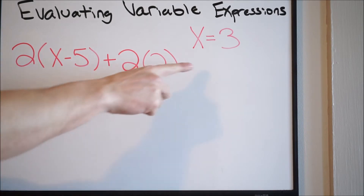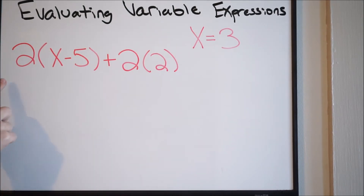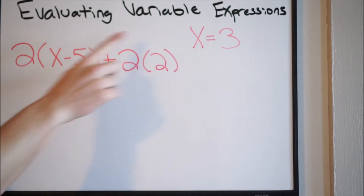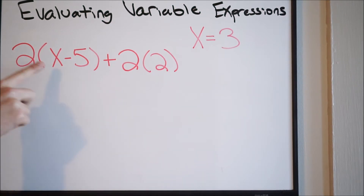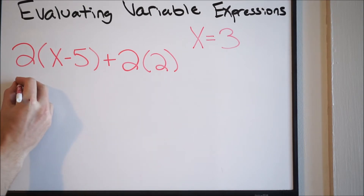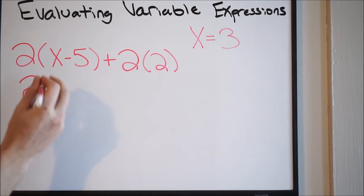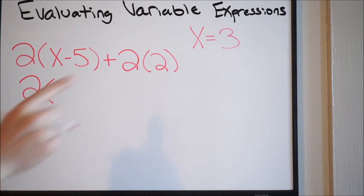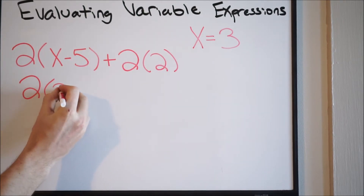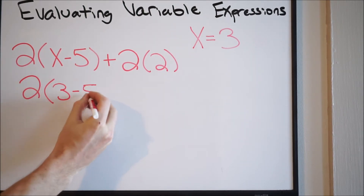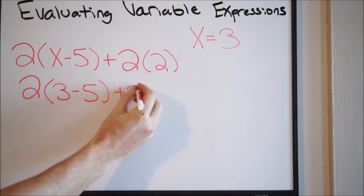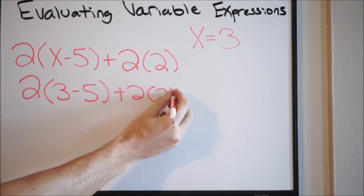In this case, we know that x equals 3, and we have the following expression below. In order to do this, we're simply going to plug in a 3 wherever we see an x. So we're going to go ahead and rewrite this. We're going to have 2, and wherever we see an x, we're plugging in a 3. So we have 2 times (3 minus 5) plus 2 times 2.